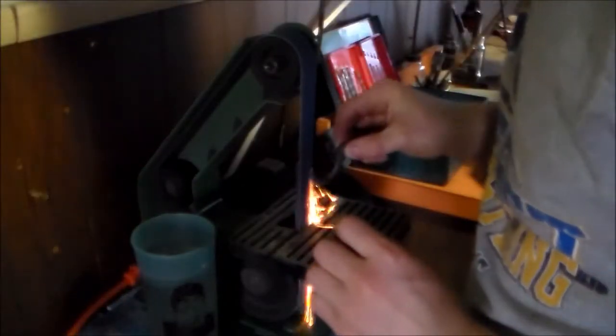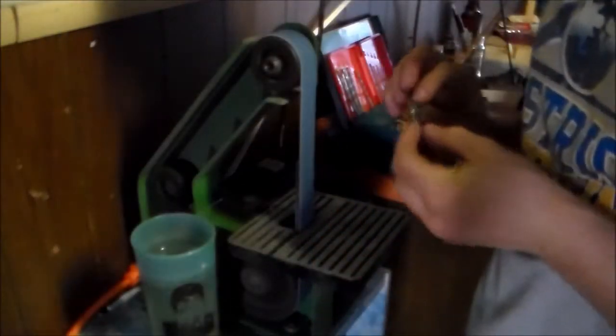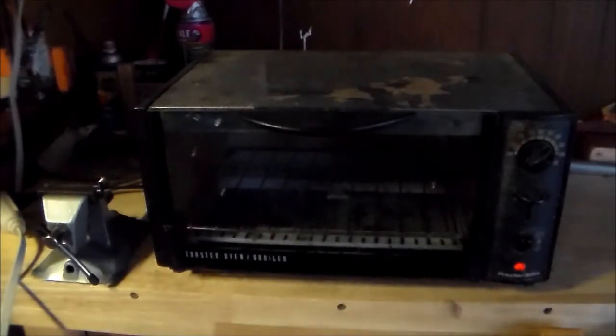After that, I cleaned off one side of the bevel so I could see the color of the steel. I tossed it in the toaster oven at about 400 degrees and I let it get to about a straw color.